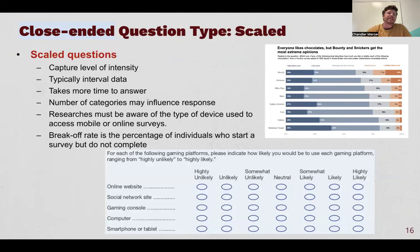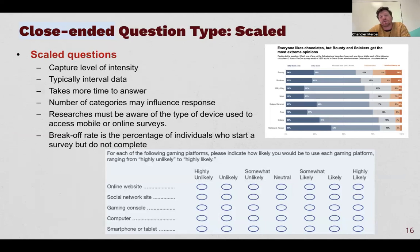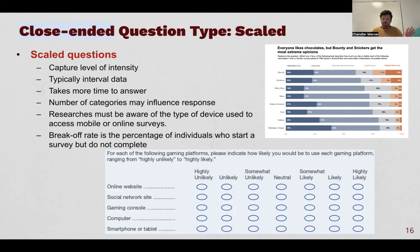The last closed-ended question type is scale. We already talked about scale a lot — it captures degrees or levels of intensity, and typically produces interval or ordinal data. These take more time to answer because there's usually a lot included. This question style — what we call a matrix table or a battery — is really long and can be quite arduous for the respondent, though easy for us as researchers to analyze. It also usually screws up usability on mobile phones because it's so wide.